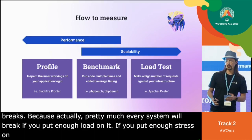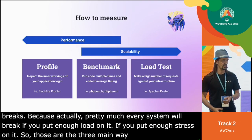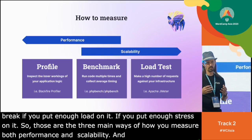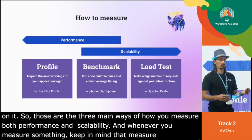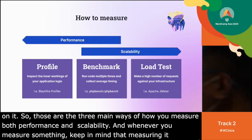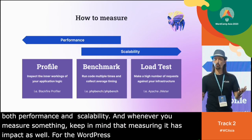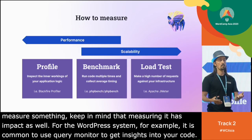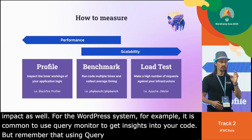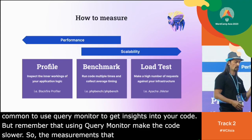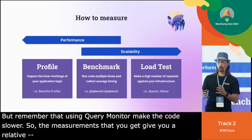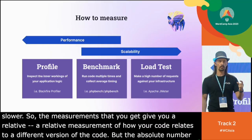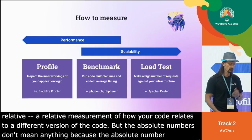Those are the three main ways of measuring both performance and scalability. Whenever you measure something, keep in mind that measuring itself has an impact. For the WordPress system, for example, it's common to use Query Monitor to get insights into your code — but remember that using Query Monitor makes the code slower. The measurements give you a relative comparison between versions of your code, but the absolute numbers don't mean anything because they'll be completely different as soon as you switch Query Monitor off. Always keep that in mind.